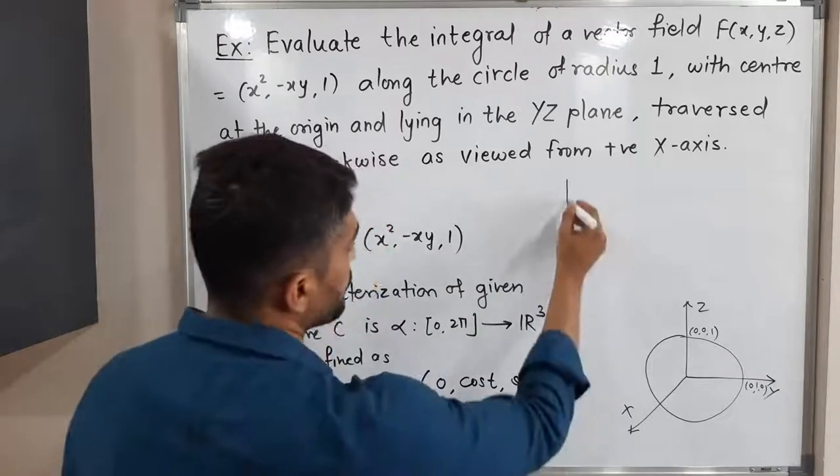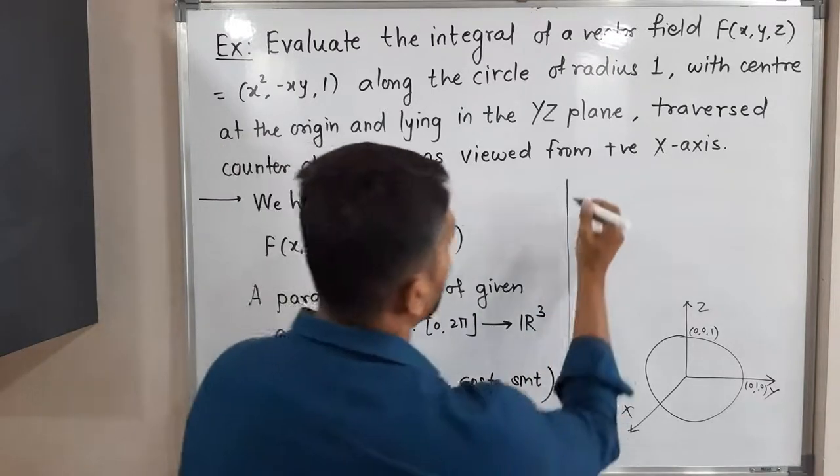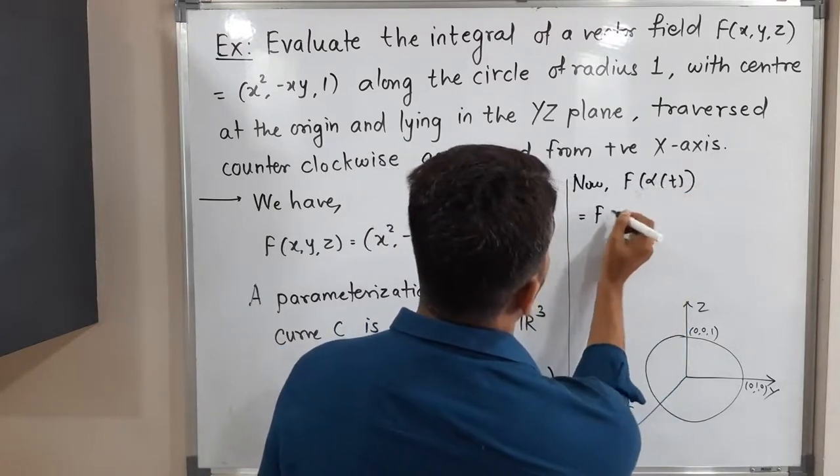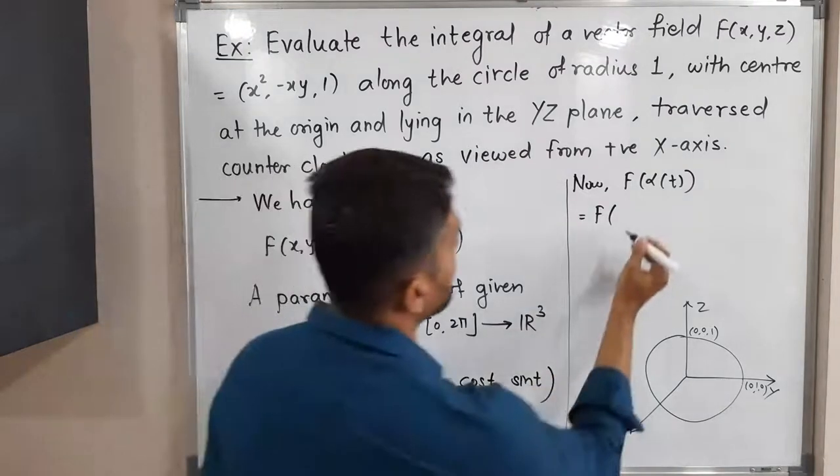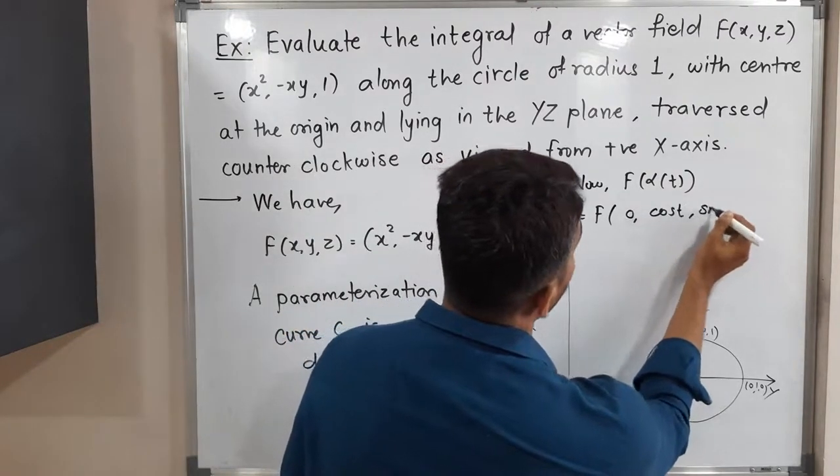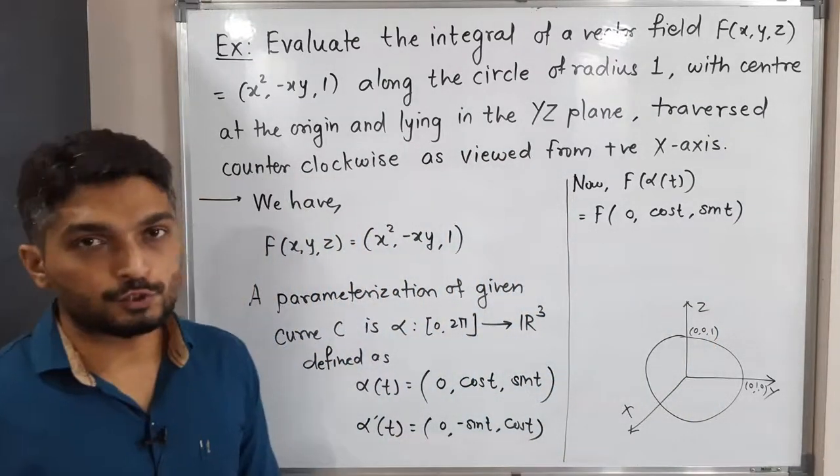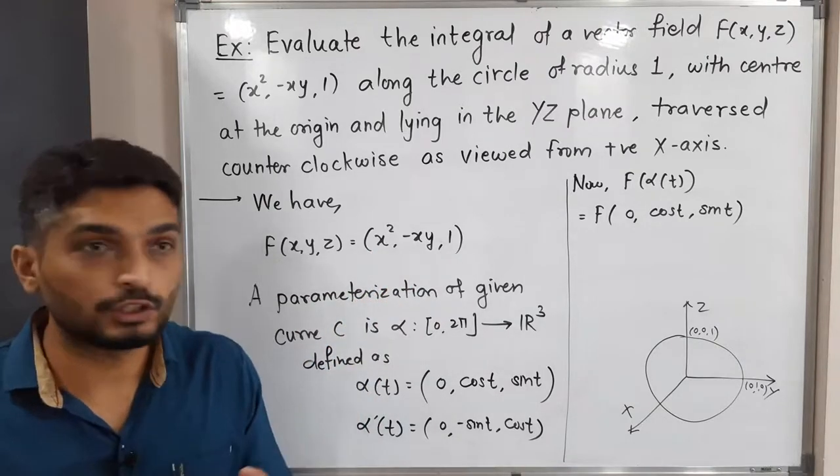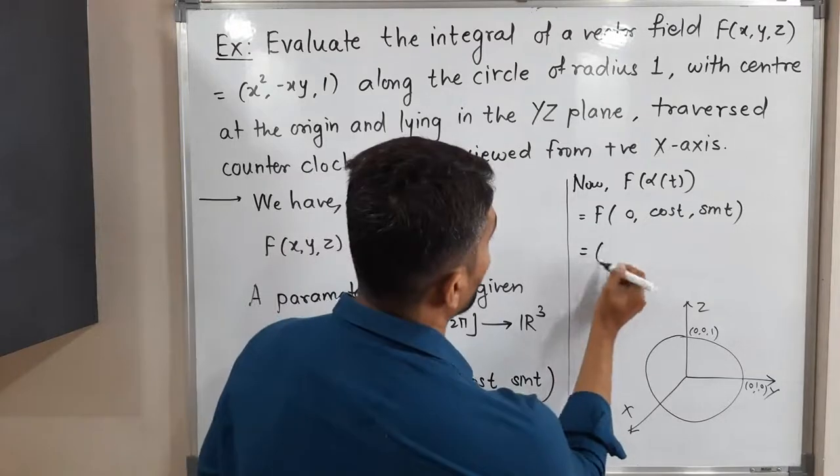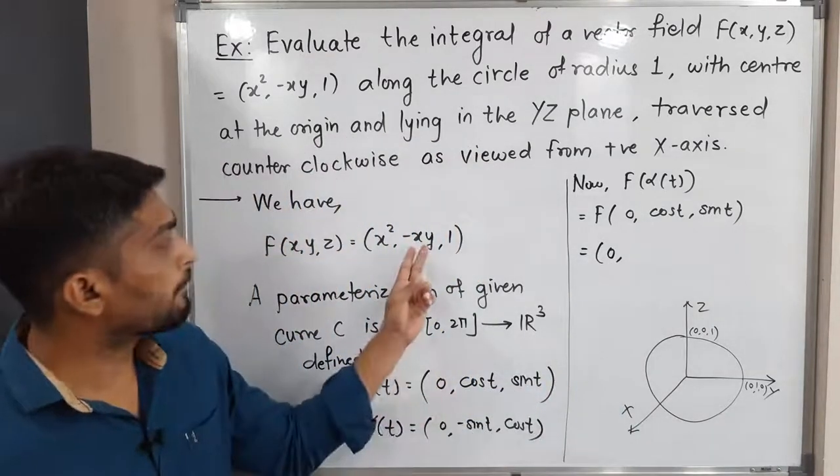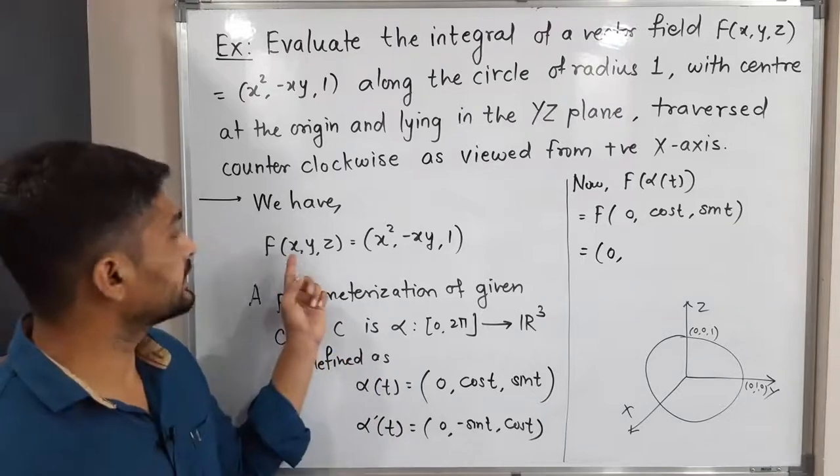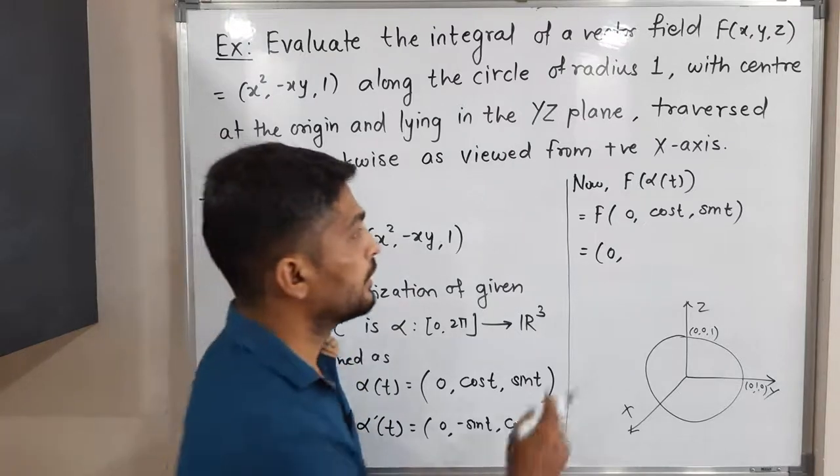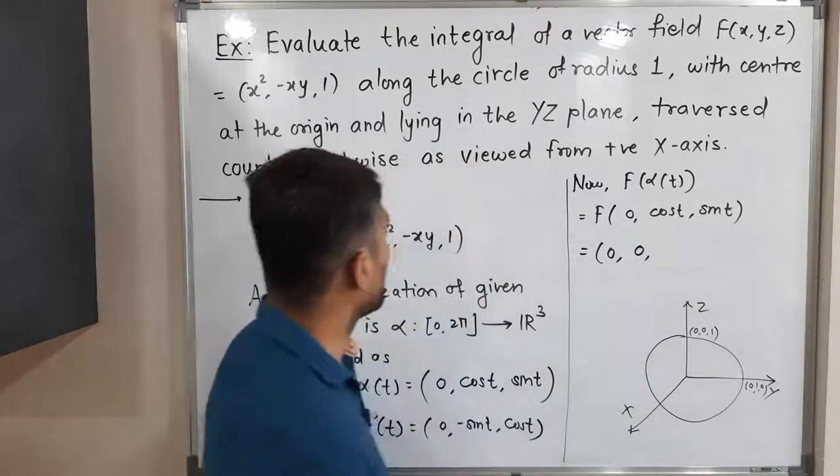After that, one more thing is required, that is F(α(t)). Let us find it. So now F(α(t)), so this is equal to F of (0, cos t, sin t). Let us follow the definition of F. Definition of F is (x² - x, y, 1). That means we take square of first component. So square of first component is 0 obviously, minus product of first and second component. Product of first and second component is 0 since 0 into anything is 0.